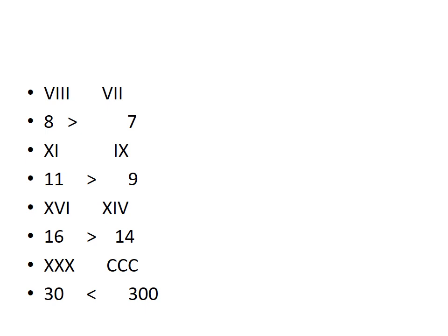Next example: X, X, X. X means 10 plus 10 = 20, plus 10 = 30. Other side: C means 100, 100, 100 = 300. Which number is greater, 30 or 300? 300 is greater. That's why the crocodile mouth will come towards 300.